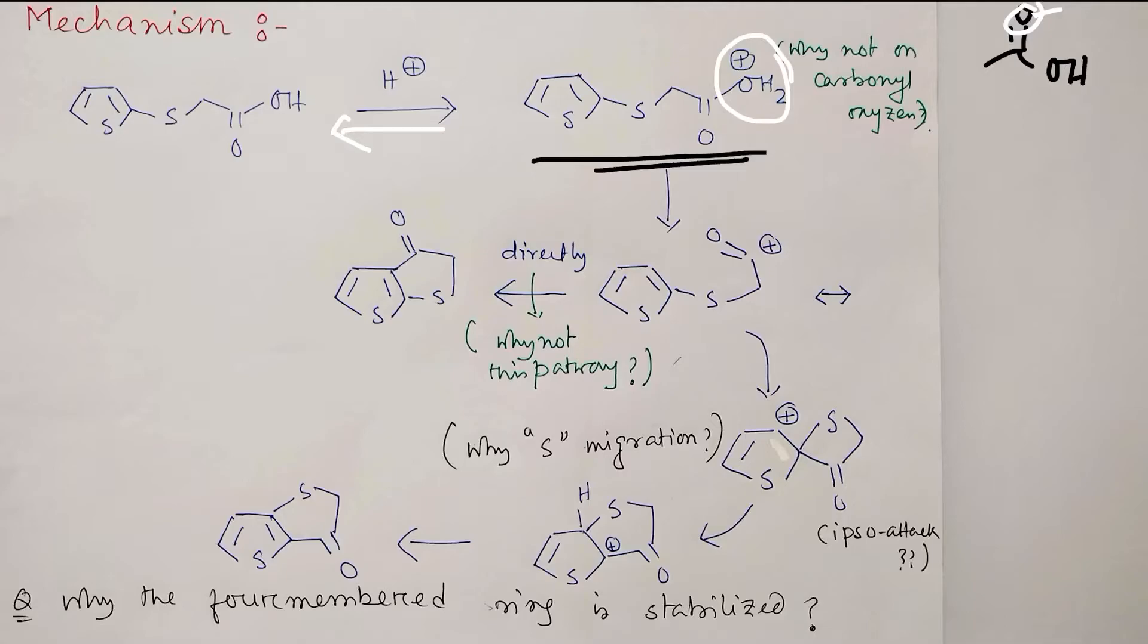After protonation it became OH2+. It's a good leaving group so it can leave and it results in acylium carbocation formation. By the way, acylium is reactive but still it has stability. This is the positive charge - it has a canonical form.